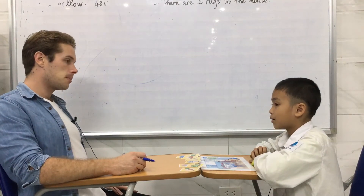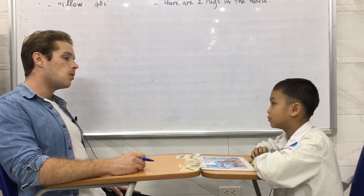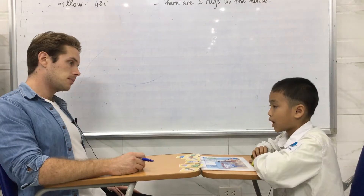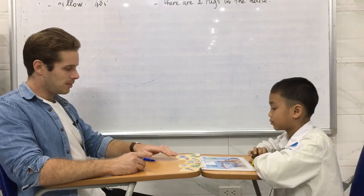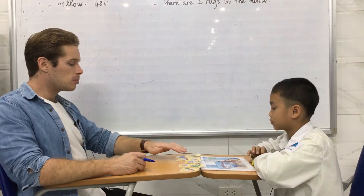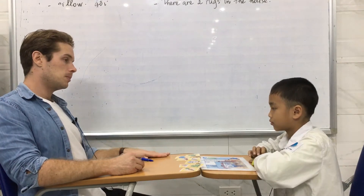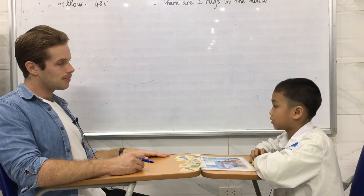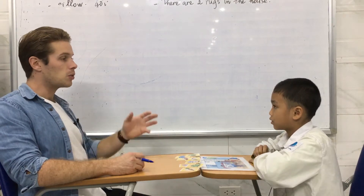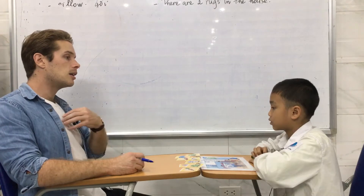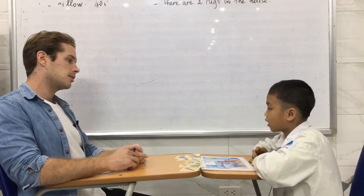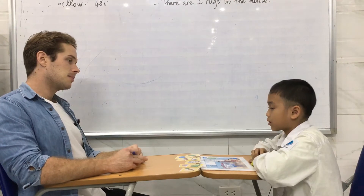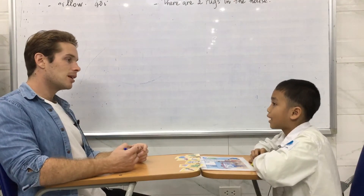What's your name? My name is O. How old are you? I'm nine years old. How are you today? I'm good. Tell me, what sports do you like? I like football. I like swimming. I like basketball.